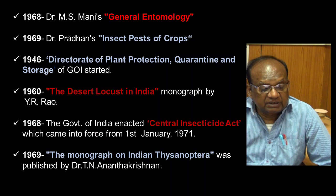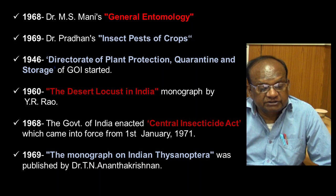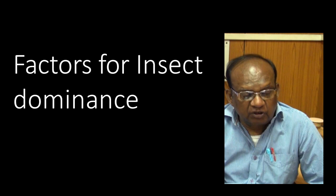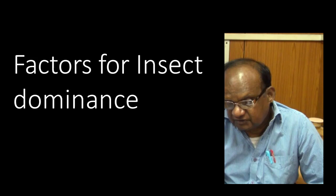In 1969, the Monograph on Indian Thysanoptera was published by Dr. T.N. Ananthakrishnan — a stalwart entomologist from Tamil Nadu who worked extensively on insects belonging to the order Thysanoptera, commonly known as thrips. This concludes the history of Entomology in India.